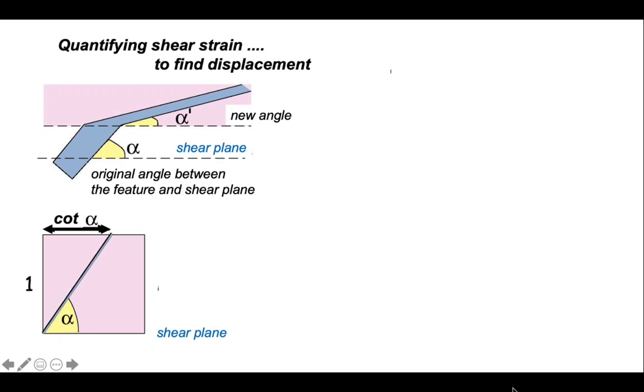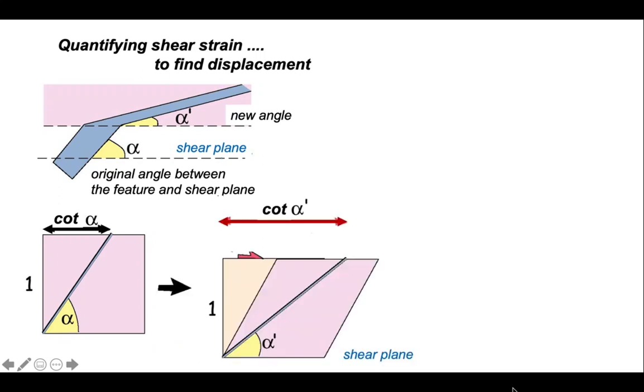So this is the orientation of our marker outside the shear zone with respect to the shear plane. Let's deform it top to the right here. So here is our shear plane in the same orientation, and our marker has been deflected towards the shear plane so that the angle alpha has changed to alpha prime.